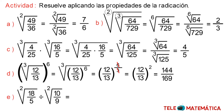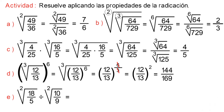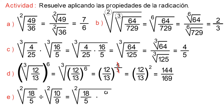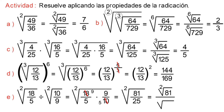Literal E: square root of 18/5 divided by the square root of 10/9. Here we apply the property of division of roots with equal indices. This gives us the square root of (18/5 ÷ 10/9). Transforming the division into multiplication and finding the reciprocal of the second fraction, then simplifying — half of 18 is 9 and half of 10 is 5 — we multiply numerators and denominators to get the square root of 81/25. Applying the nth root of a rational number property, we get the square root of 81 divided by the square root of 25. Calculating both roots, the final result is 9/5.